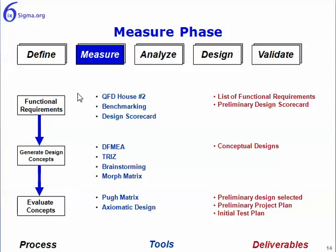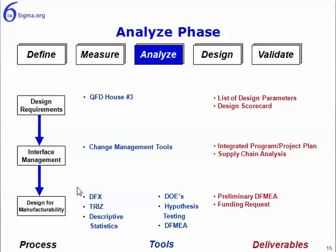In the Measure phase, we want to determine the functional requirements, generate design concepts, and then evaluate those concepts. In the Analyze phase, we want to provide some design requirements — using QFD and a series of QFD houses, specifically QFD house three in this case — coming up with design requirements, determining what the interface management looks like, and design for manufacturability or serviceability.